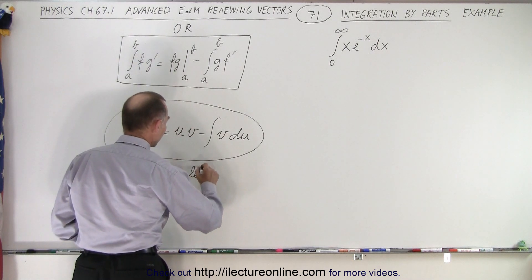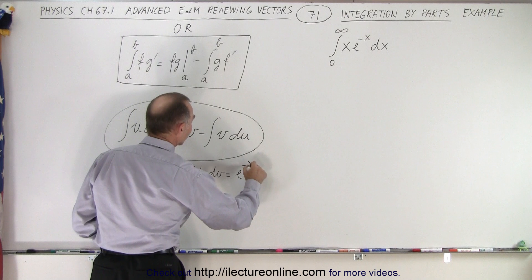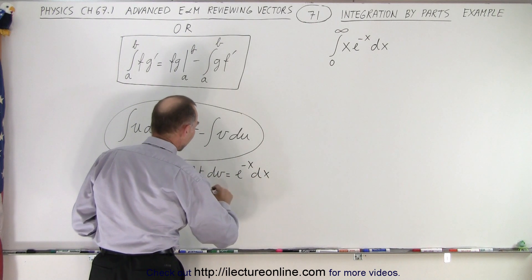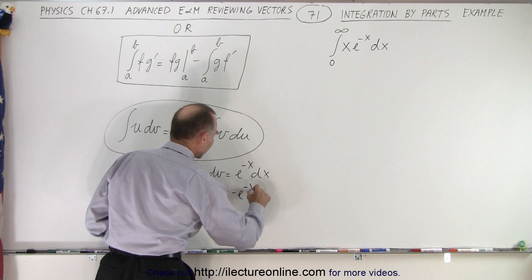Then if we let dv equals e to the minus x dx, then v is the integral of that, which would be minus e to the minus x.